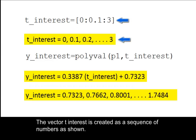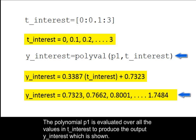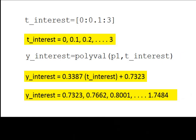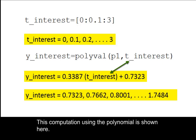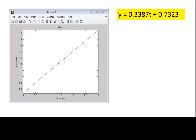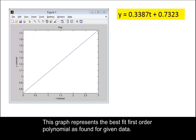The vector t interest is created as a sequence of numbers as shown. The polynomial p1 is evaluated over all the values in t interest to produce the output y interest as shown. This computation using the polynomial is shown here. This graph represents the best fit first order polynomial as found for the given data.